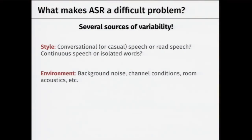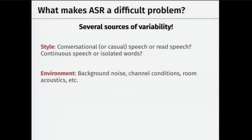Another source is environment. Speaking in noisy conditions, reverberant rooms with lots of echo, or in the presence of interfering speakers is particularly challenging. If background noise is people talking, it's really hard for ASR systems to pick out the foreground voice. Environment is an important source of variability, and people are actively working on robust ASR systems that are robust to noise.